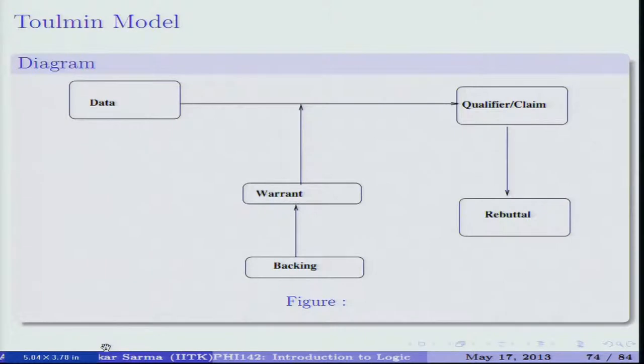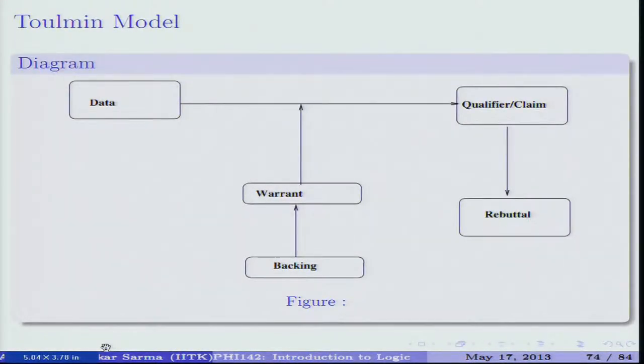We will explain what we mean by data, qualifier, warrant, and backing with examples. All these constitute what Toulmin calls the layout of an argument. A good or effective argument depends on having a good warrant and good backing, which creates a strong connection between data and claim. This is a more complete layout than simply analyzing premises and conclusion.